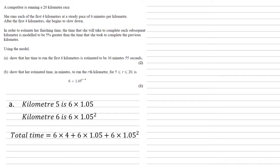So our total time is going to be 6 × 4 for the first four kilometers, plus 6 × 1.05, plus 6 × 1.05², which gives us 36.915 minutes. But we need this in minutes and seconds, so the quick way to do this is to take the decimal 0.915 and times that by 60. We get 55, so an answer of 36 minutes 55 seconds as required.